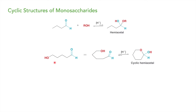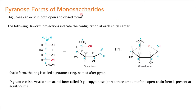So what happens if a hydroxyl group and an aldehyde group are present in the same molecule? The oxygen will attack this carbon and give you a cyclic hemiacetal form, which forms in the presence of acid.